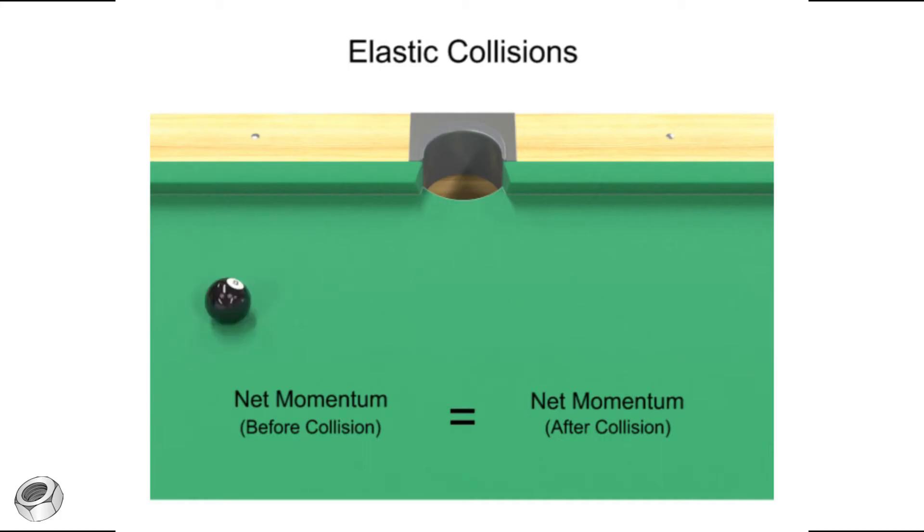If the eight ball is already in motion when a similarly moving cue ball collides with it, then the eight ball will gain some of the initial cue ball's momentum, and the net momentum before and after the collision will be conserved.